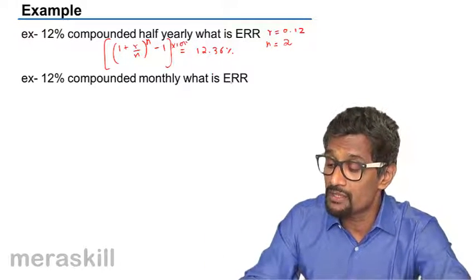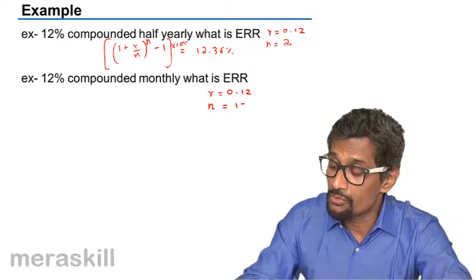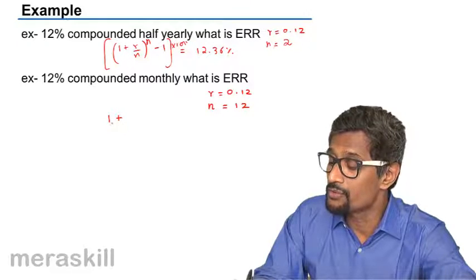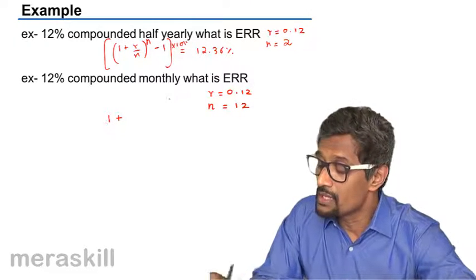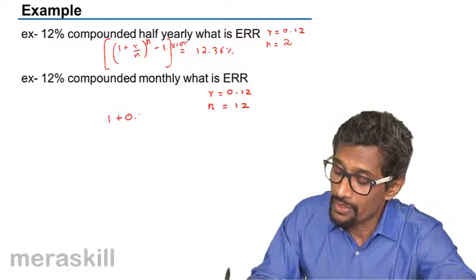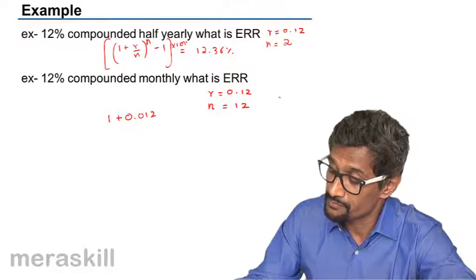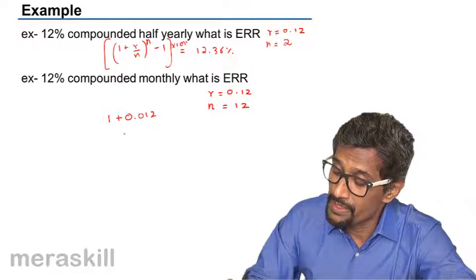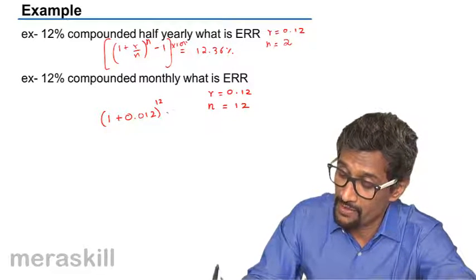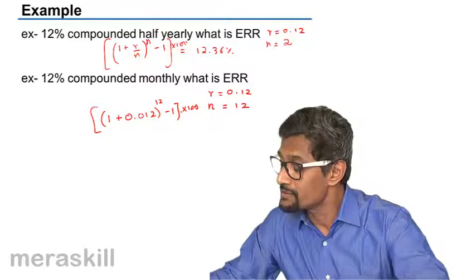The same thing, what is 12% compounded monthly ERR? In this case R is definitely 0.12 but N will turn out to be 12. So it's eventually 1 plus 0.12 by 12 which will turn out to be 1.01. So it's going to be 1.01 raised to N, that is 12, minus 1 times 100.